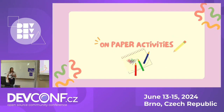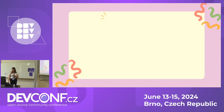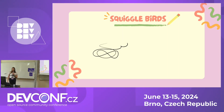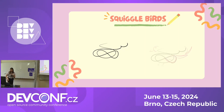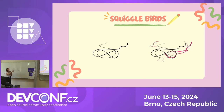Let's take a look at paper activities. The first one is squiggle birds. The point is really simple — you make some kind of squiggle. You can imagine you are three years old trying to duplicate your parents' signature, so you will draw anything. Then you try to find a bird in it and finish the drawing with bird parts like a head and tail. Is there any volunteer who would like to finish this squiggle drawing?